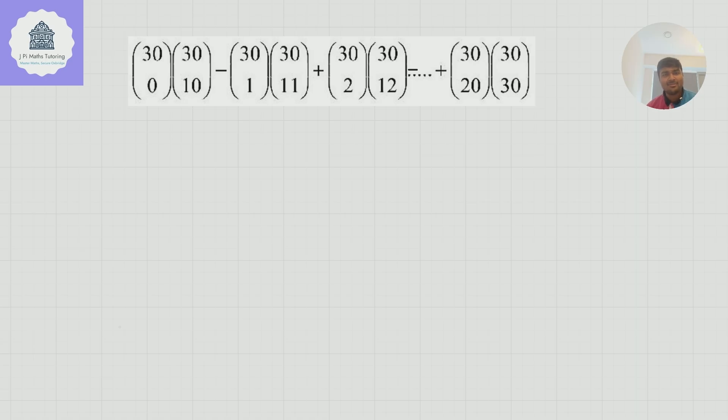We want to evaluate the sum 30 choose 0 times 30 choose 10, minus 30 choose 1 times 30 choose 11, plus 30 choose 2 times 30 choose 12, and so on. This alternating sum up to 30 choose 20 times 30 choose 30. Do pause the video and have a go at this yourself.